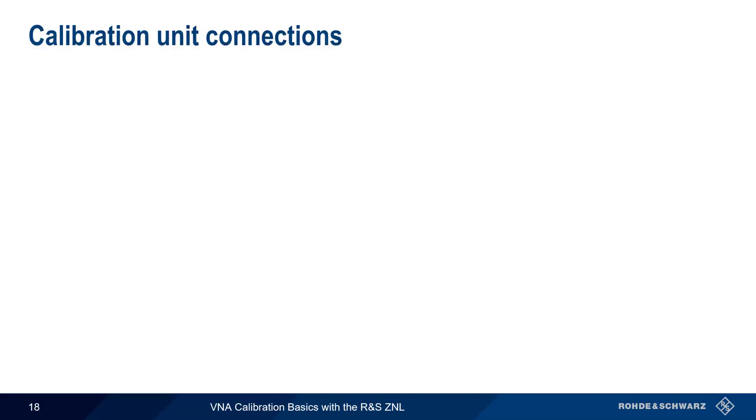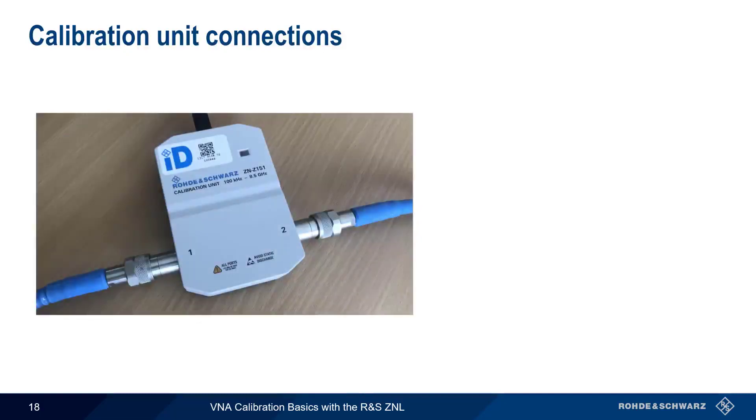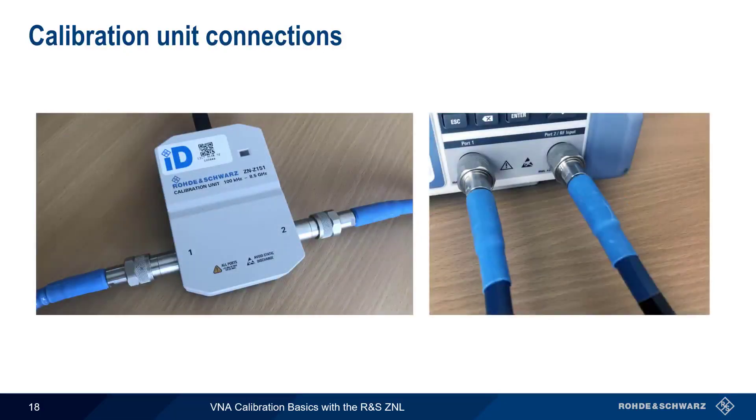Before we run either of these, we need to be sure our calibration unit is correctly connected. In addition to the USB connection, each port of the Cal unit should be connected to a network analyzer port. There's also no need to disconnect and reconnect the unit during calibration, as we did with the manual calibration standards shown previously.